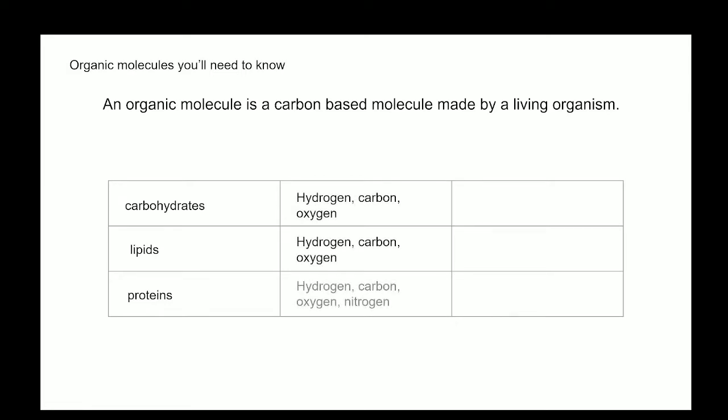Carbohydrates and lipids are both made of hydrogen, carbon, and oxygen, and proteins are made up of carbon, hydrogen, oxygen, and sometimes nitrogen. These organic molecules have monomers.